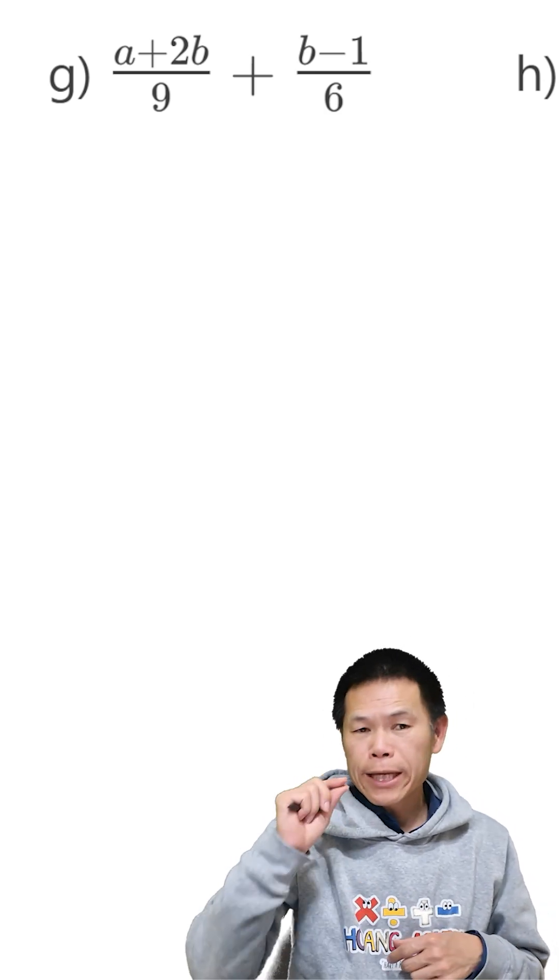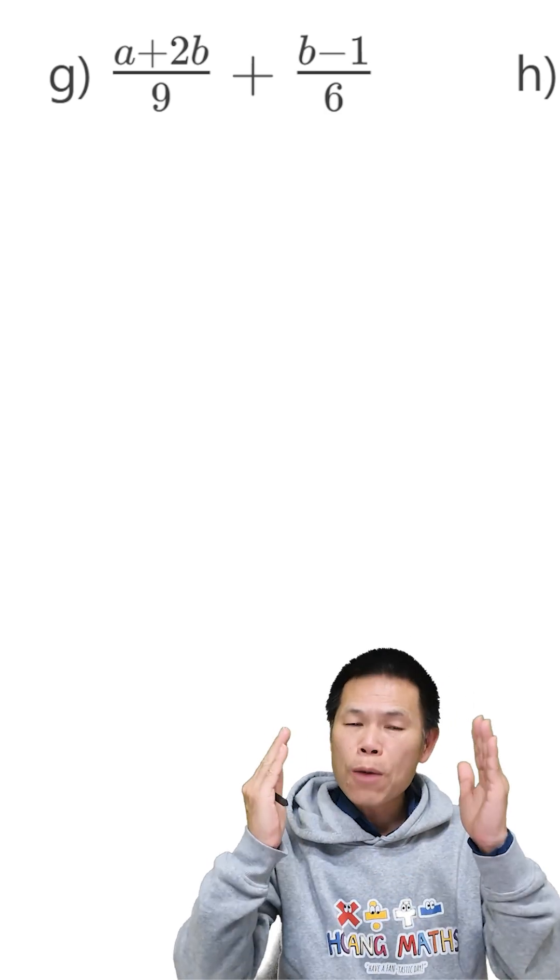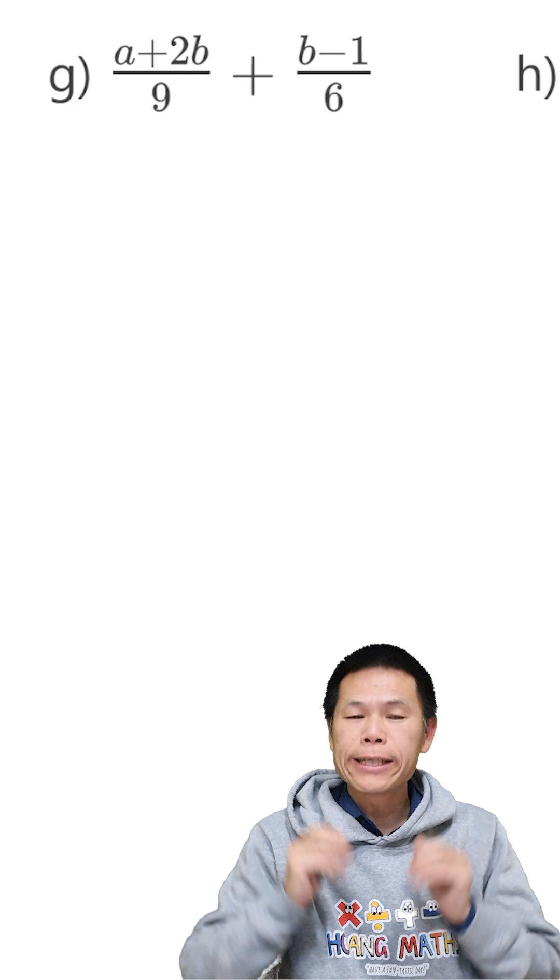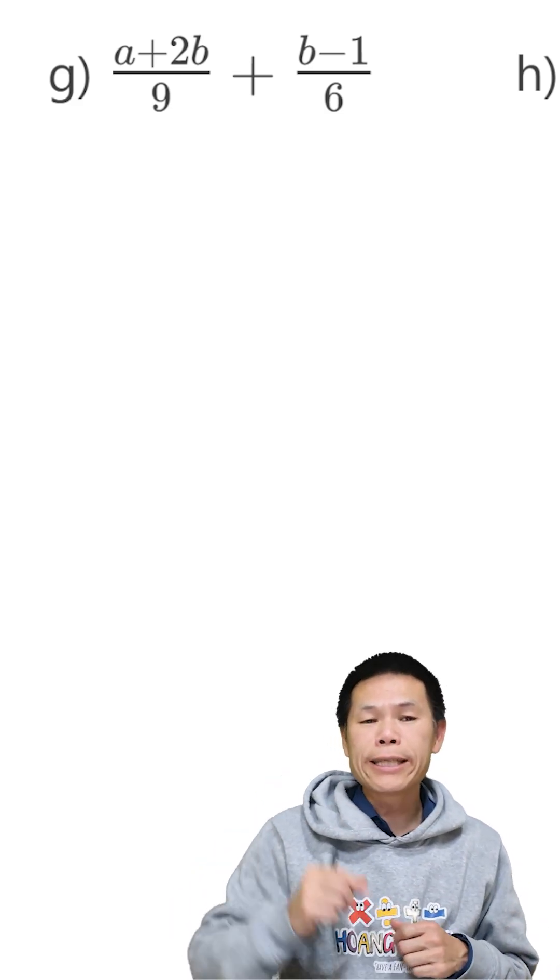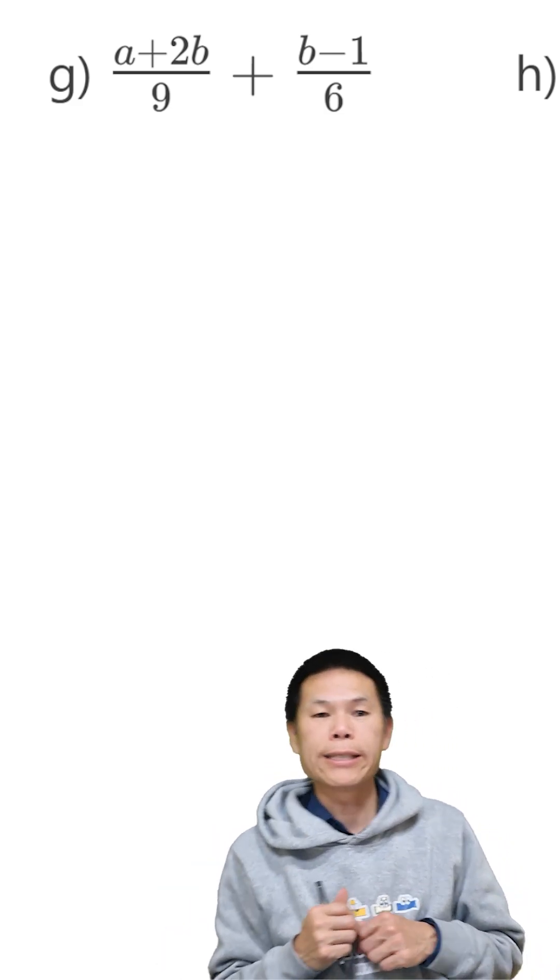So 9 and 6, therefore the lowest common denominator is 18, because 9 times 2 is 18, 6 times 3 is 18.